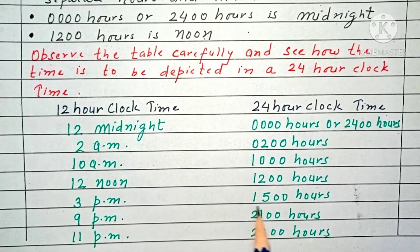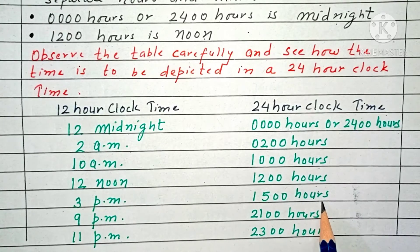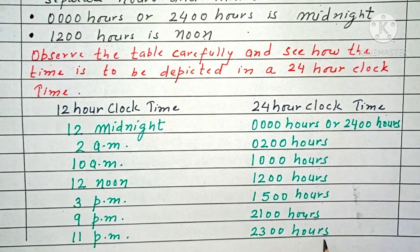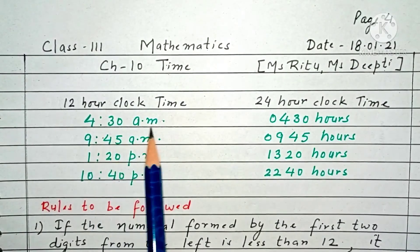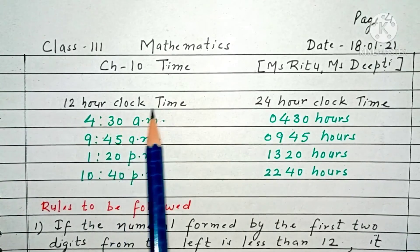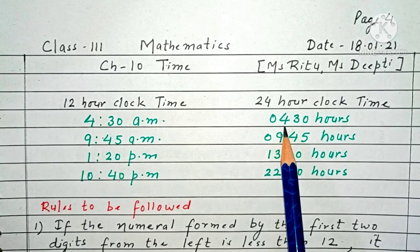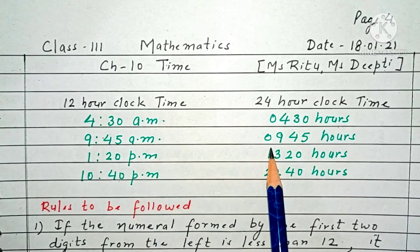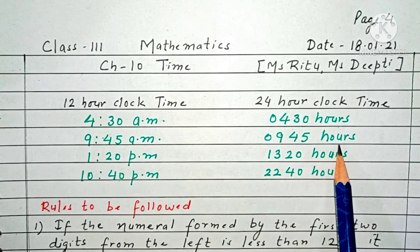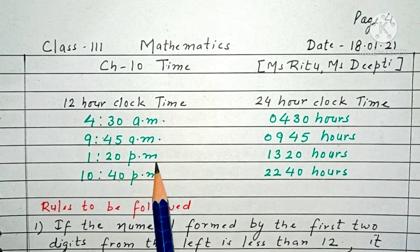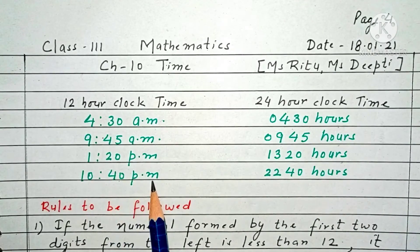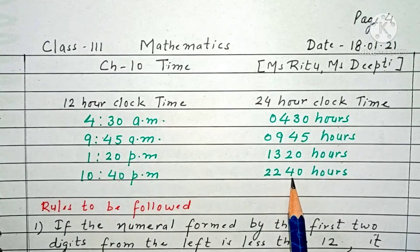3 PM is 1500 hours. 9 PM is 2100 hours. 11 PM is 2300 hours. 4:30 AM in 12-hour clock time is depicted as 0430 hours. 9:45 AM is 0945 hours. 1:20 PM is 1320 hours. 10:40 PM is 2240 hours.